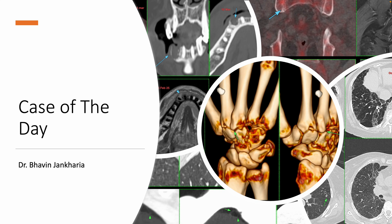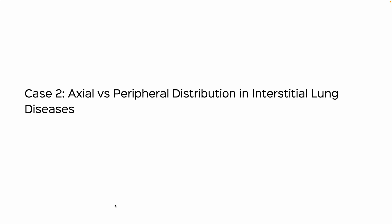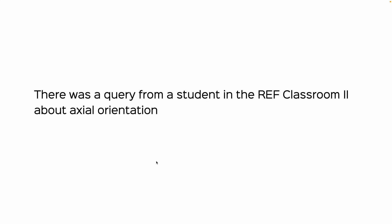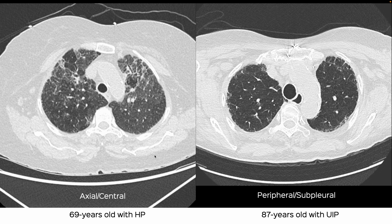Welcome to case of the day. As I had said yesterday, it's an experiment — I'm trying to make two to three minute snippets of cases I've seen during the day. This is axial versus peripheral distribution in interstitial lung diseases. There was a query from a student in the REF classroom about what is meant by axial orientation of an ILD, or axial distribution.